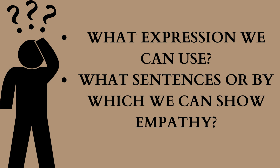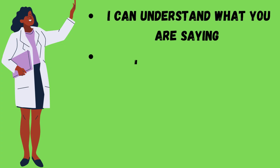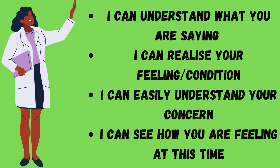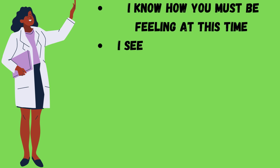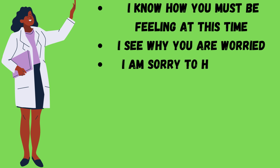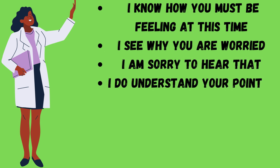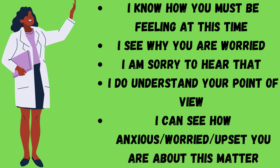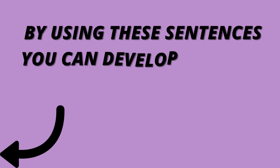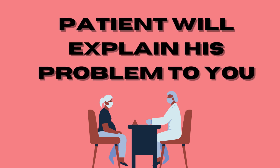Now, what expressions can we use — what sentences — by which we can show empathy. I can understand what you are saying. I can realize your feelings, your condition. I can easily understand your concern. I can see how you are feeling at this time. I know how you must be feeling at this time. I see why you are worried. I'm sorry to hear that. I do understand your point of view. I can see how anxious, worried, or upset you are about this matter. By using these sentences, you can develop a feeling of trust and the patient will explain his problem to you.